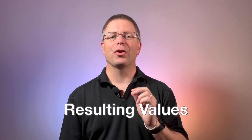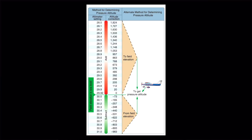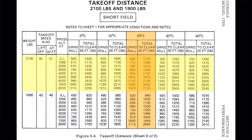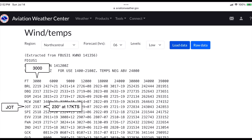Resulting values are the result that is tied to the index value. For example, the resulting value for the altimeter setting of 29.7 is 205 feet. The resulting value for a pressure altitude of 1,000 feet at 20 degrees Celsius is a ground roll of 715 feet. And the resulting value for 3,000 feet in the winds aloft forecast at Joliet is 230 degrees at 17 knots.